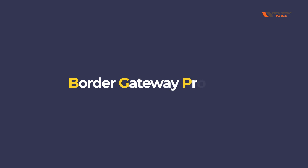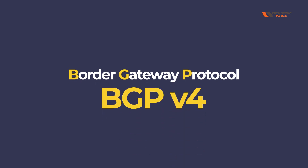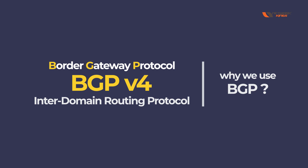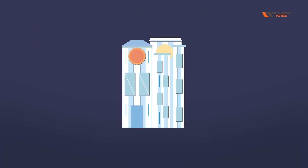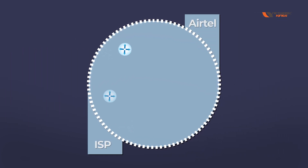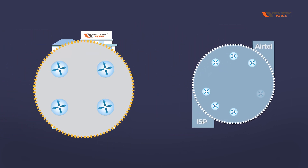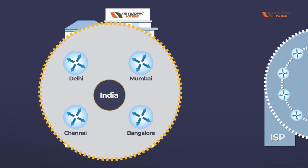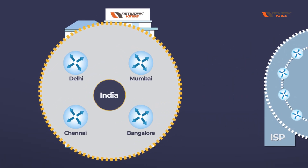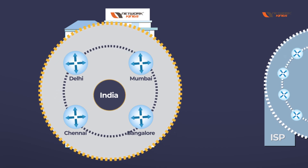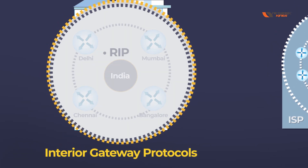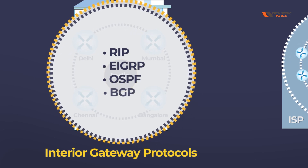BGP, or Border Gateway Protocol version 4, is an inter-domain routing protocol. To understand why we use BGP, consider a company called Networkings, which uses a service provider like Atel — or AT&T or Sprint. This company has multiple branches: Delhi, Mumbai, Chennai, and Bangalore — four locations in India. Inside the company, you would run interior gateway protocols such as RIP, EIGRP, or OSPF.